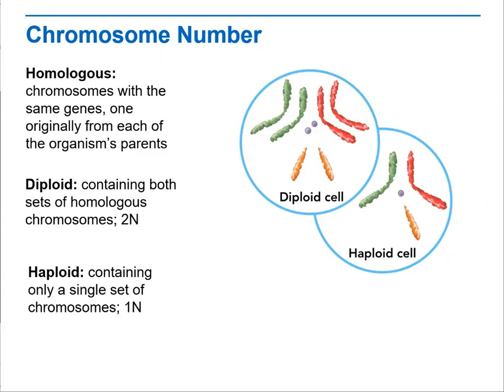Chromosomes can be diploid or haploid. Diploid, as discussed before, the prefix 'di' goes for the number two. Haploid goes for the half of the number. So when we talk about diploid, it means four sets of homologous chromosomes — a total of two sets, meaning it has two from each one of them. Compared to haploid, which contains only one single set of chromosomes, with a total of one.